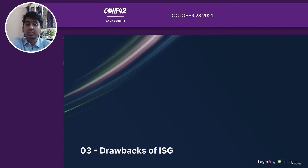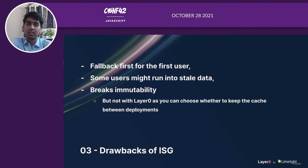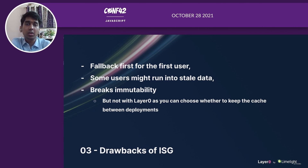Now let's look at some drawbacks. The first user is bound to see a fallback, whether it's a placeholder or waiting for a request to get fulfilled. Some users might run into stale data. And with ISG, you can break immutability — it's somewhat dependent on the platform you are hosting your app on. With Layer 0, you can opt out of preserving the cache between deployments.